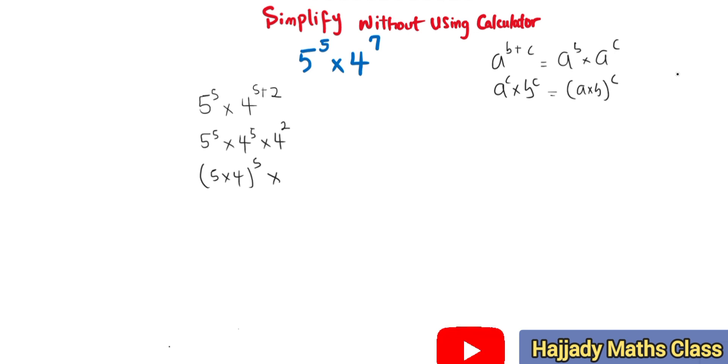So 4 is the same thing as 2 raised to power 2, raised to power 2. Here, 5 times 4 is going to give me 20 raised to power 5 times 2 raised to power 4.